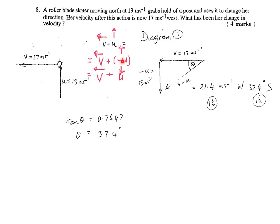saying V plus the opposite of U. Now U was North to begin with, so the opposite of U is going to be South. So V plus the opposite of U will be this diagram here. V is 17m per second West and the opposite of U is 13m per second South.